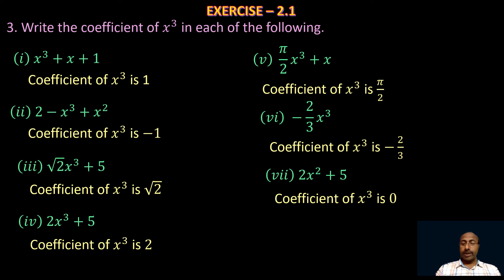In this polynomial, the coefficient of x is also 0 because there is no x term. Take the eighth one: 4. In this polynomial also there is no x³ term, so the coefficient of x³ is 0.